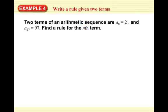For example four, we're going to write a rule given two terms. Two terms for an arithmetic sequence are A8 equals 21 — the eighth term equals 21 — and the 27th term equals 97. We're going to take that information and write a rule for the nth term.